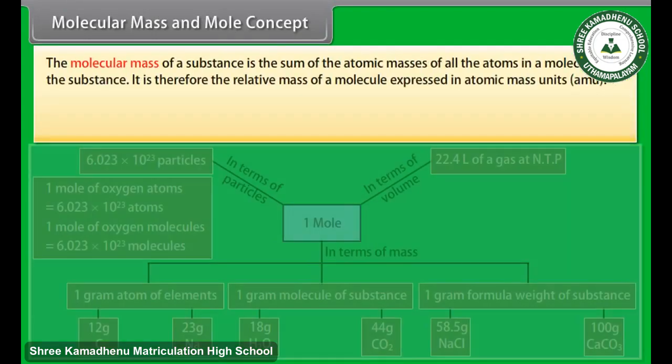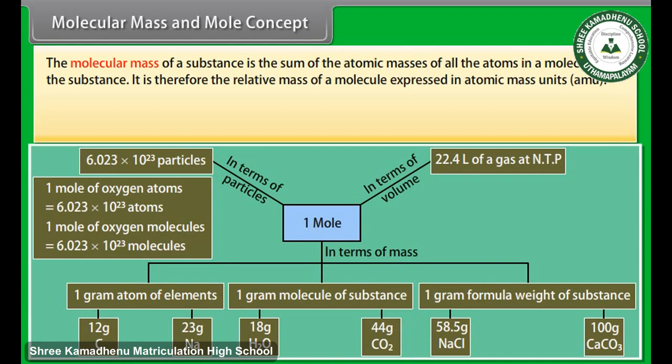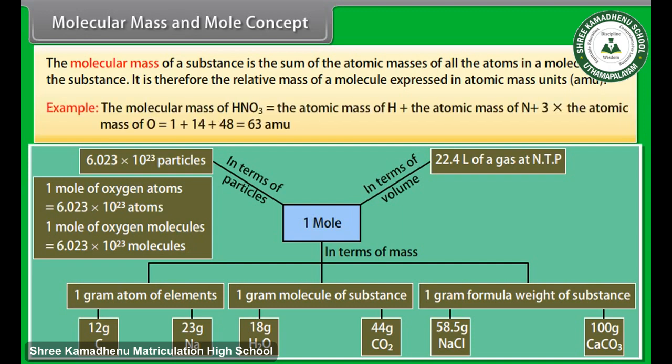Molecular mass and mole concept: The molecular mass of a substance is the sum of the atomic masses of all the atoms in a molecule of the substance. It is therefore the relative mass of a molecule expressed in atomic mass units. Example: the molecular mass of HNO₃ equals the atomic mass of H plus the atomic mass of N plus 3 times the atomic mass of O, which equals 1 + 14 + 48 = 63 units.